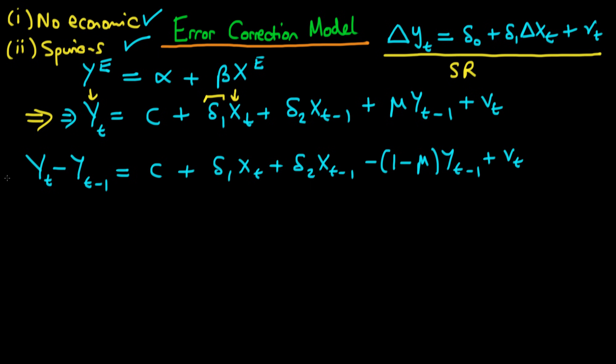Okay so now this left hand side here is just the change in yt which is helpful because if y is i1 then the change in yt we know is going to be i0. In other words it's going to be stationary.